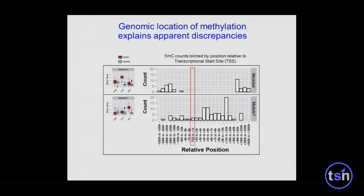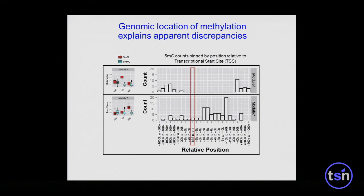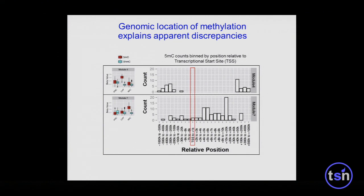We looked at the genomic location of these enrichments of 5-MC to explain the discrepancies. Enrichment of 5-MC in Module 4 was found to lie in distal regulatory regions — like the enhancers that generally occur far upstream of transcription start sites. Similarly, the enrichment of 5-MC in the neuroprogenitor cells was found just downstream of the transcription start site. Since the average gene is around 15 KB, this would indicate enrichment of 5-MC in gene bodies, consistent with gene activation of those genes in neuroprogenitor cells.